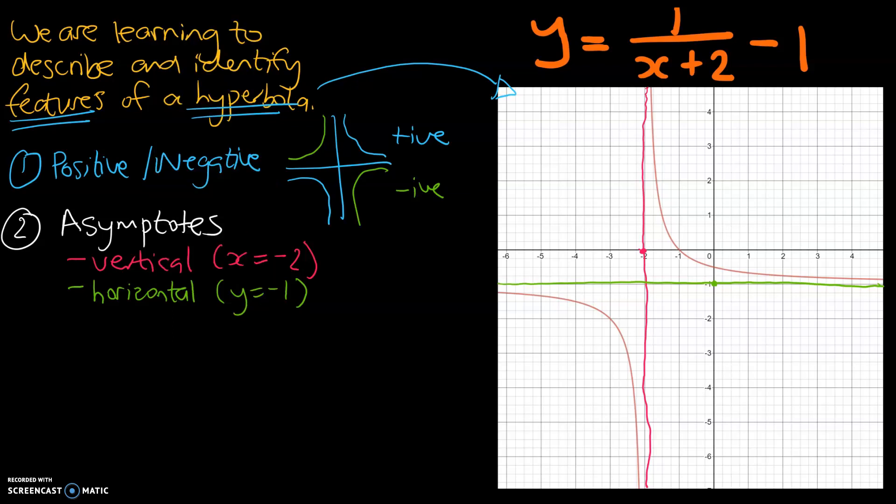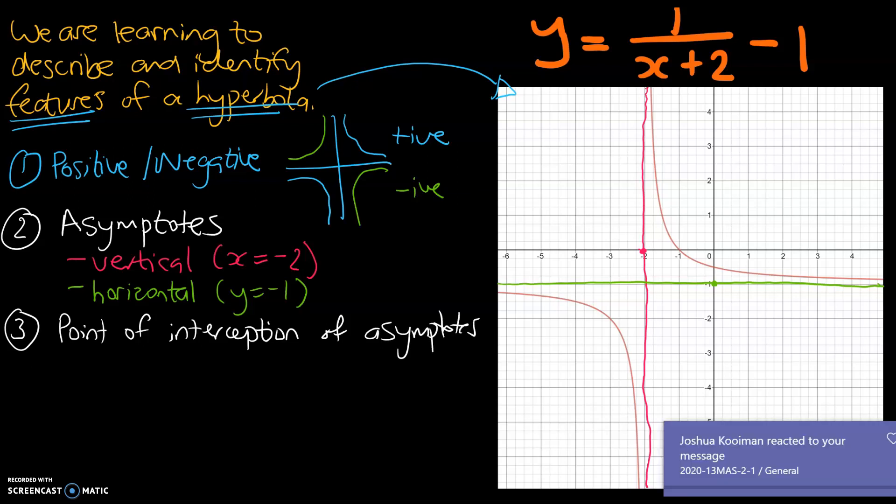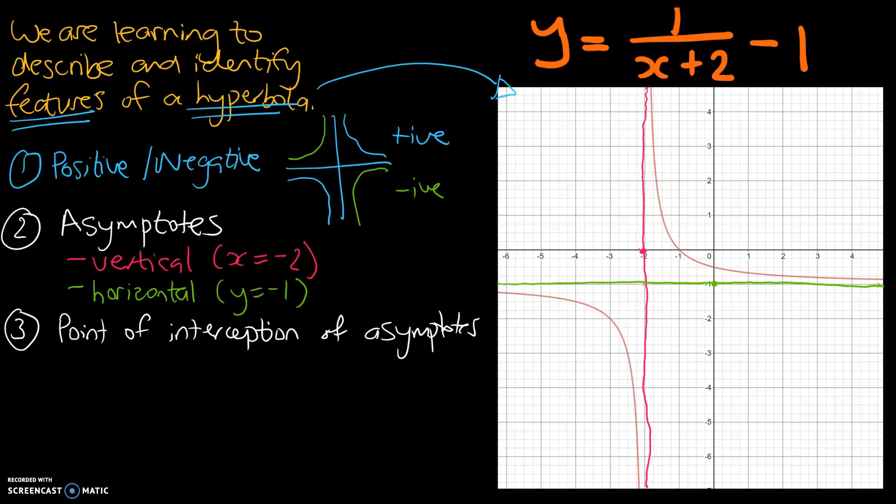And the third feature relates to the asymptote feature. It's the point of interception of asymptotes. We can normally see that by looking at our graph. And we can see they intercept there at negative two, negative one. So that coordinate, negative two comma negative one, would be the point of interception of our two asymptotes.